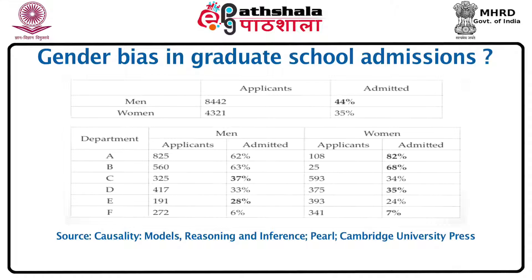A very famous example of Simpson's paradox is the case of gender bias in graduate school admissions at the University of California at Berkeley, where there was some suspicion of discrimination against women. Further analysis showed that there was a third variable confounding this association: the department to which the candidate applied. It turned out that women tended to apply to more competitive departments, and it is this competition — and not gender — which led to women being accepted less than men at UC Berkeley. Failure to account for department would lead to erroneous conclusions about gender bias.